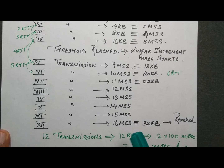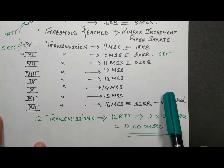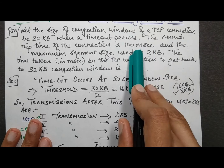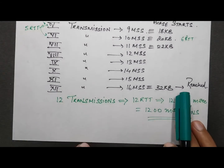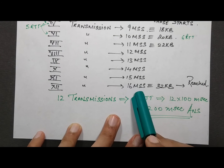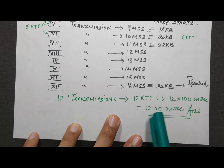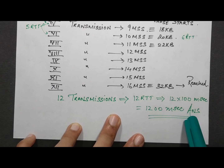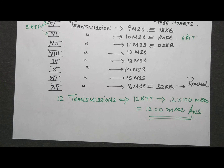The 12th transmission reaches 16 MSS — our target. Since each transmission takes one RTT and the RTT is 100 milliseconds, 12 transmissions take 12 × 100 ms = 1200 milliseconds, or 1.2 seconds. That is the answer to this GATE 2014 two-mark question.